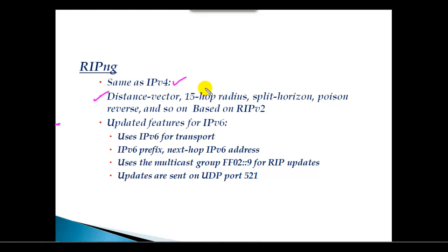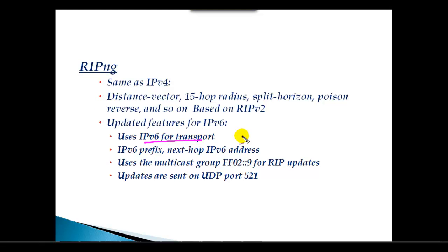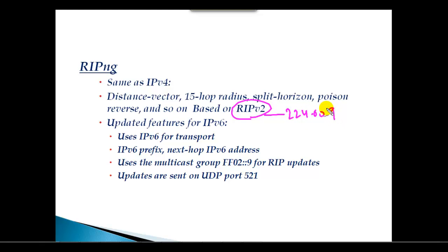RIPng is a distance vector protocol that only works up to 15 hops. Split horizon, poison reverse — everything is totally based on RIP version 2. The calculation process is the same as RIPv2, but the only difference is it uses IPv6 for transportation, forwarding IPv6 traffic, and the next hop address also uses IPv6 addressing.